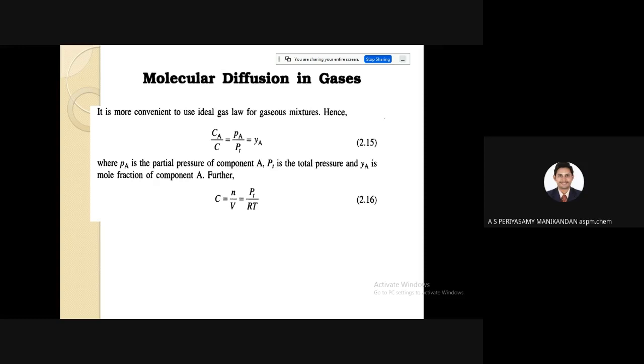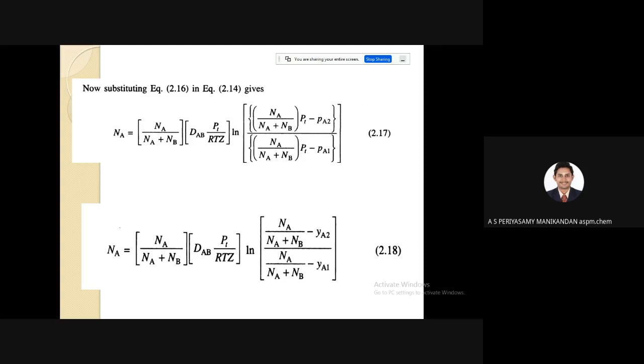This is the molecular diffusion in gases. Usually if the gas is an ideal gas, we can use this ideal gas law which is PV equals NRT where this N by V is our concentration. N by V is represented as C, which is Pt by ZRT. If you apply this law, you can get the flux equation in terms of this C can be written as Pt by RT.